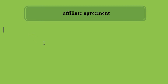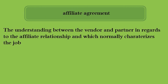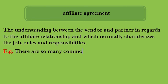Affiliate Agreement. The understanding between the vendors and the partner regarding the affiliate relationship, which normally characterizes the jobs, roles, and responsibilities. There are so many common sections in affiliate agreements. In the next affiliate marketing tutorial I will bring you more English terms. If you have any questions, please leave a comment in the comment section.